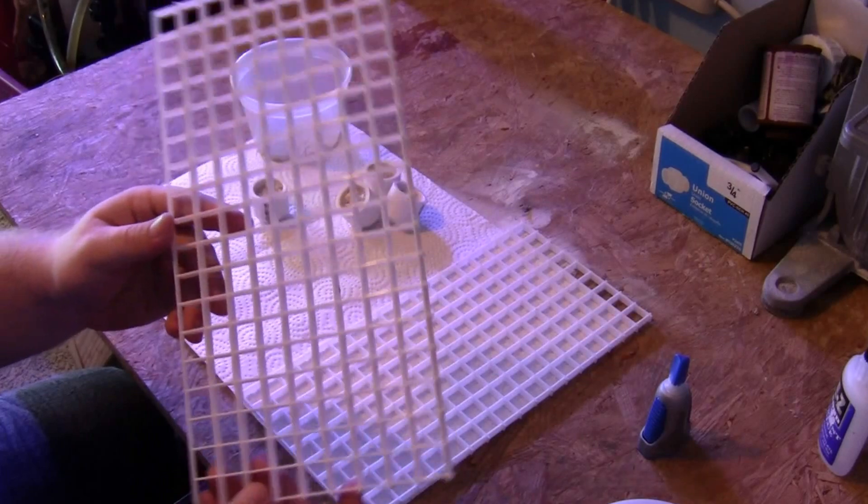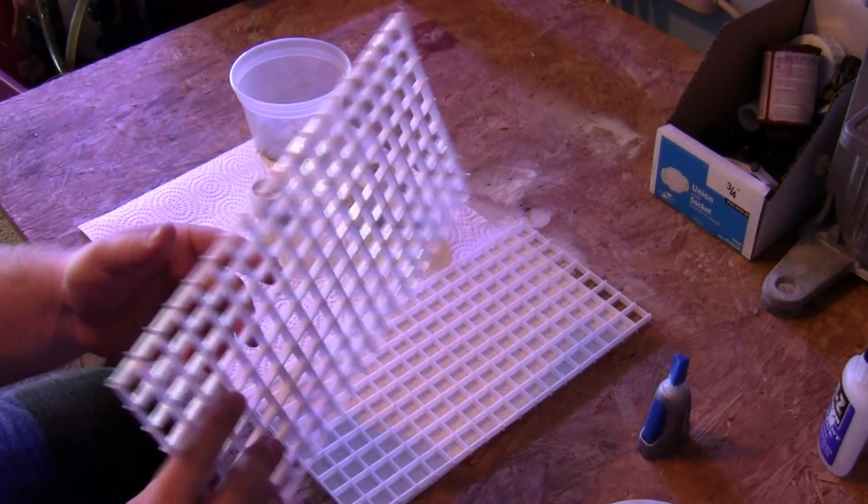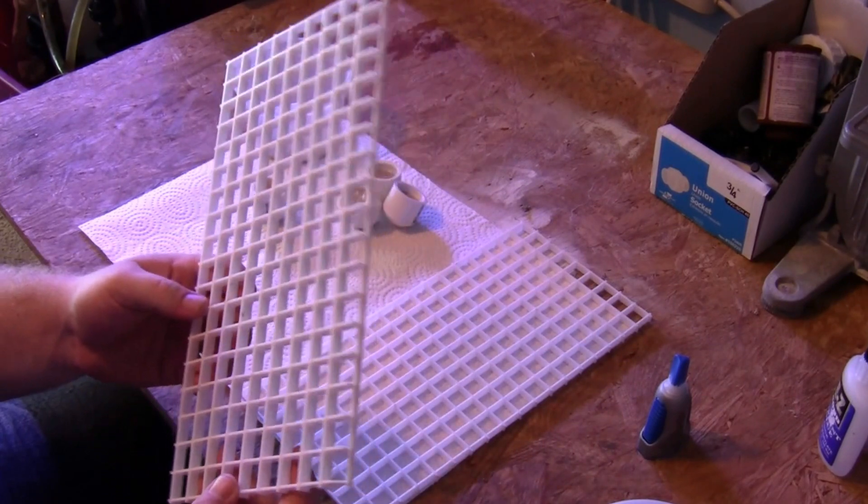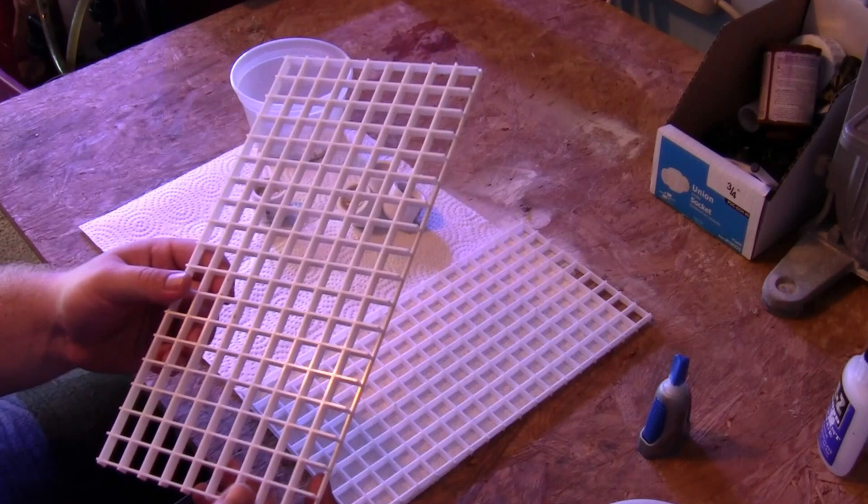We also use lighting diffuser from Lowe's. Cost about $12.50 a sheet and one will make around 8 to 12 frag racks. It's always good to have extras around too.